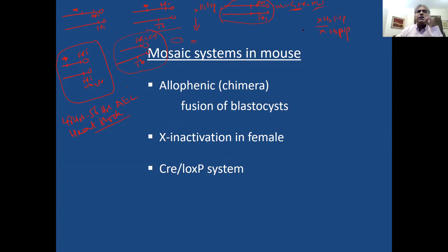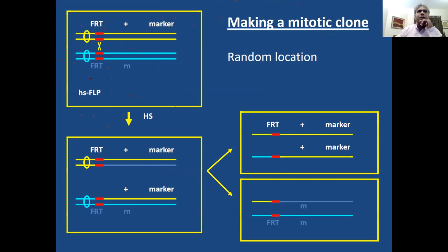Now what heat shock is going to do, because these flies are also containing heat shock flip. Flip is enzyme under heat shock. They are going to act on these FRTs, this one, and induce recombination. And this is what is happening. So recombination will be induced. FRT marker, the GFP. FRT mutation.